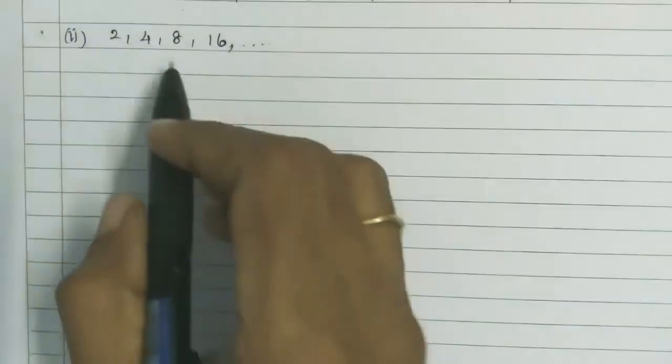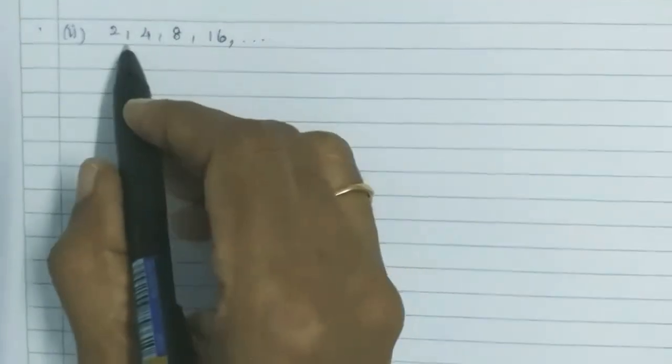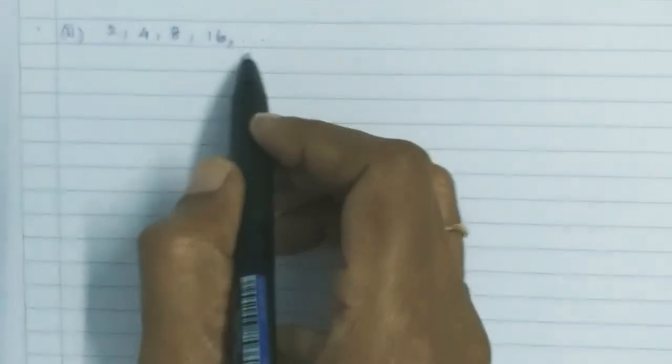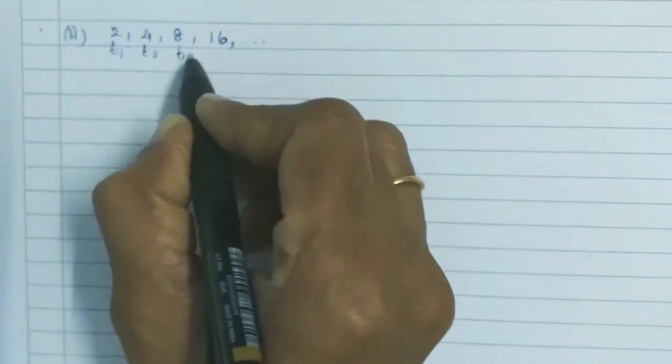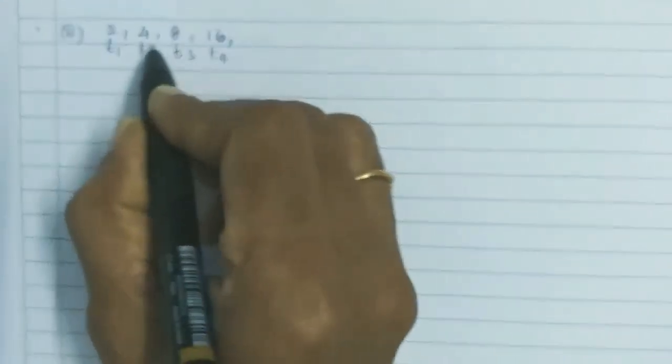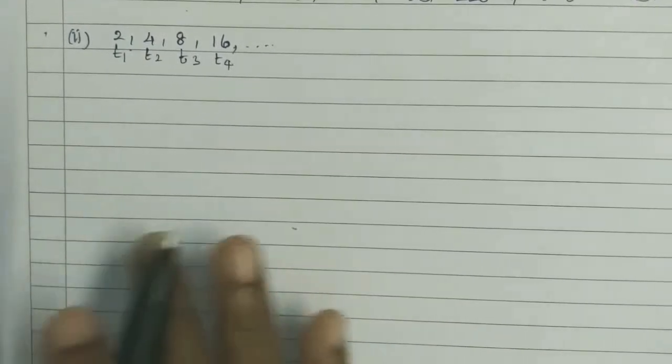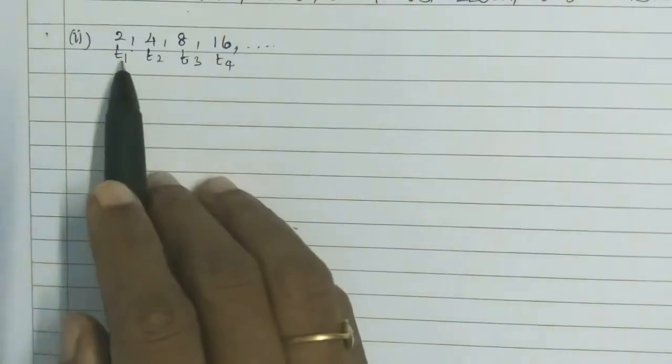Looking at the second sequence, we have 2, 4, 8, 16. This is T1, T2, T3, T4. We are going to check it. Then we can find D.